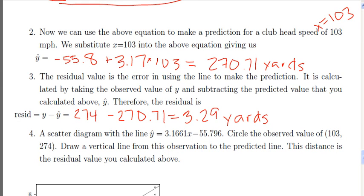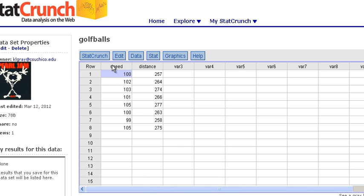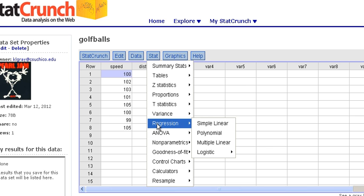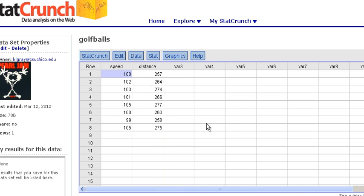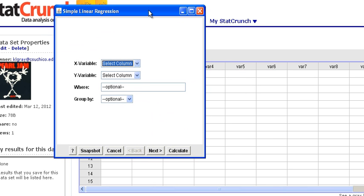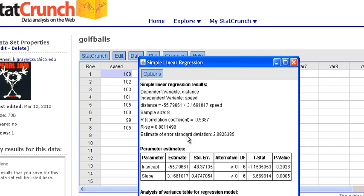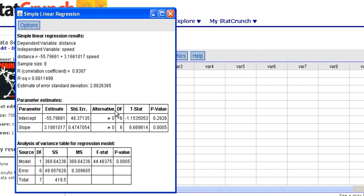Let me just demonstrate that in StatCrunch. So StatCrunch, I've entered the data into two columns as well. I can go to Stat, Regression, and Simple Linear. I put my value for X, our explanatory value, which is speed, and our Y variable is distance. Then all I need to do is hit Calculate. It gives me some output, not all of which we need, but here is the equation of the line, just like we wrote, except we have distance and speed instead of Y and X.